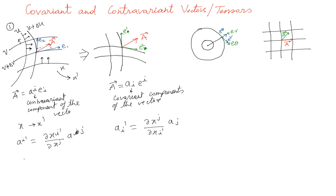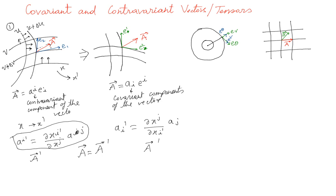These two representations still describe the same vector — in the new coordinate frame a equals a-prime. These are called the contravariant components of a vector. Now, in a broader definition: a vector itself may be contravariant in nature, defined by these transformation laws. For example, a simple position vector changes according to this rule because all its components change that way, so a position vector is a contravariant vector for the basis system e1, e2.